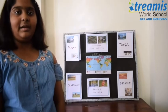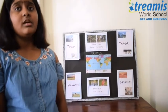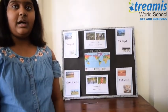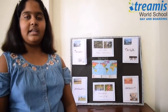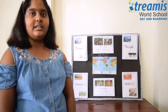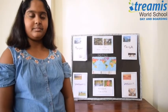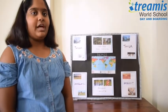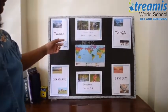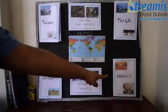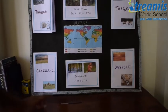First, let's see what biomes are. Biomes are a large part of earth and they have a certain climate and certain living things. We have four types of biomes which are tundra, forests, desert, and grasslands.